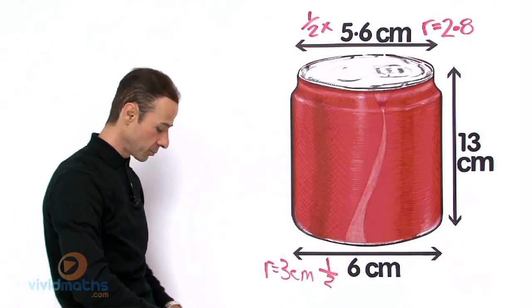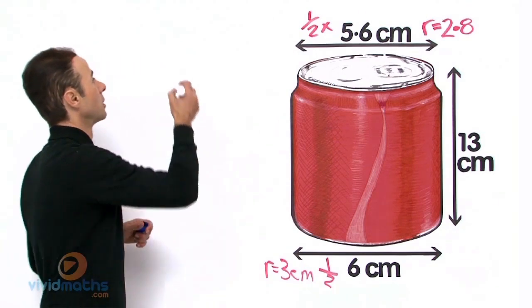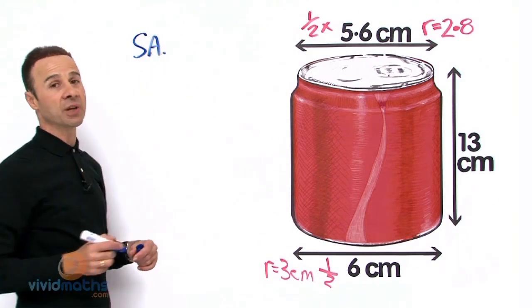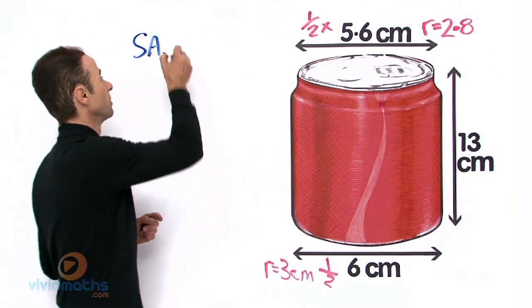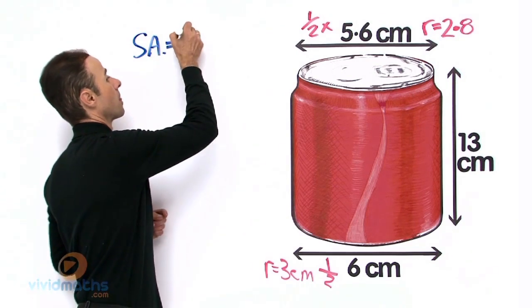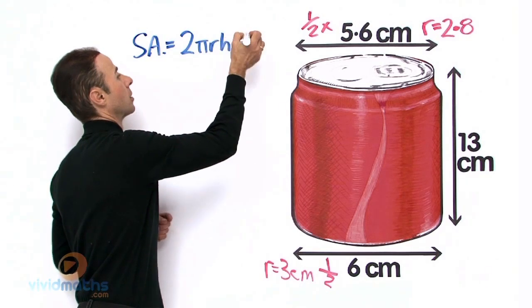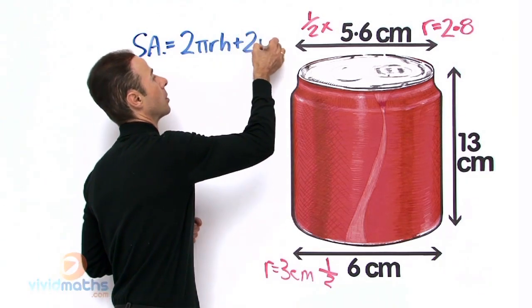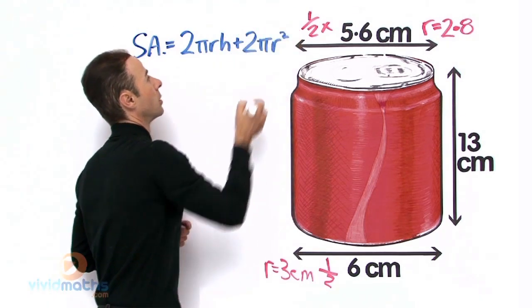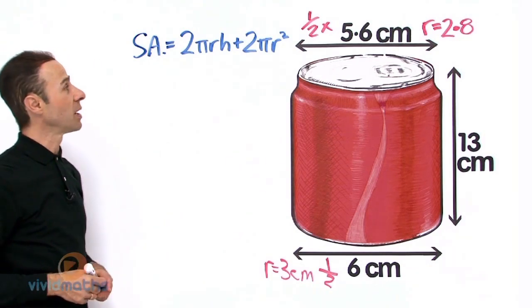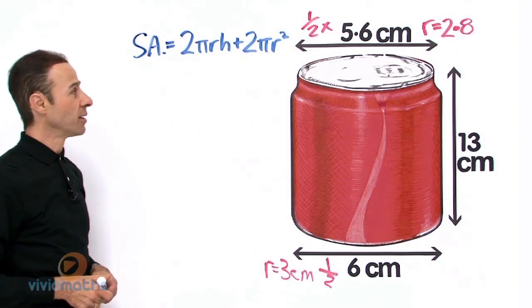So the surface area for a cylinder is 2πrh plus 2πr².